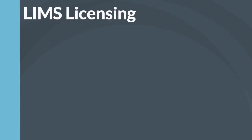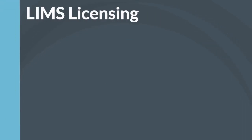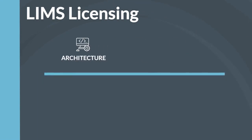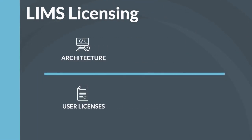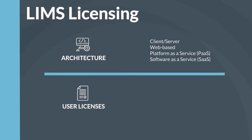LIMS licensing. Comparing LIMS license costs can be complicated because there are several different types of LIMS architectures and licenses available. LIMS architectures available include client-server, web-based, platform-as-a-service, and software-as-a-service. Different architectures can support different types of licenses.